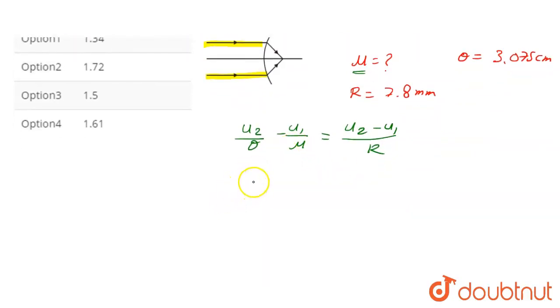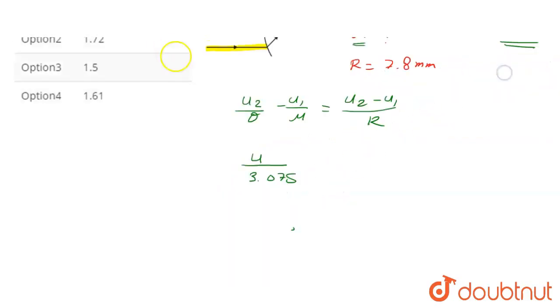Now put the values: mu upon 3.075, this is the v value, equals mu minus 1 upon 7.8. This is the r value, 7.8, which is given in the question.